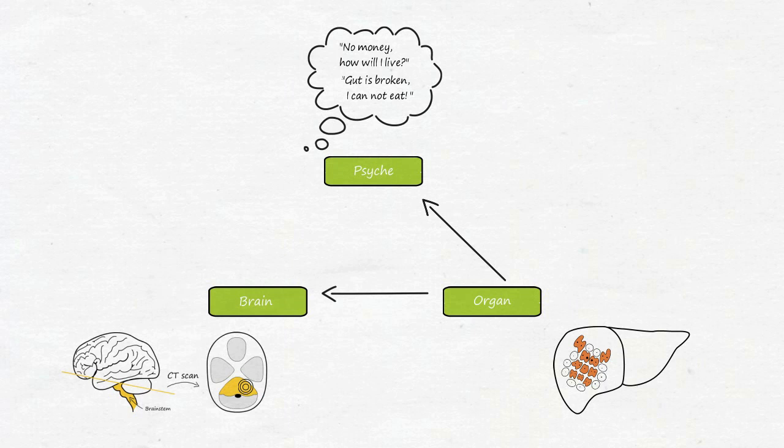Correspondingly, you will find a liver tumor in every patient showing a Hamer focus in their liver control center, and their thoughts will be preoccupied with starvation anxiety. Theoretically, you should also be able to deduce the other two levels from the psyche. However, since the psyche is not measurable, such conclusions are extremely error-prone and therefore of little relevance.